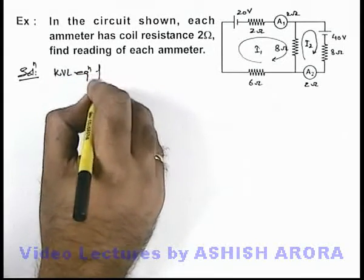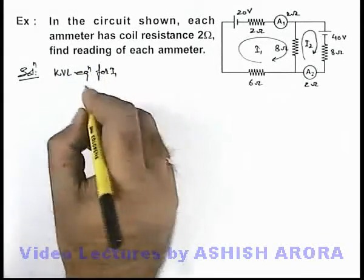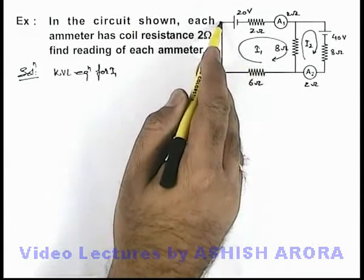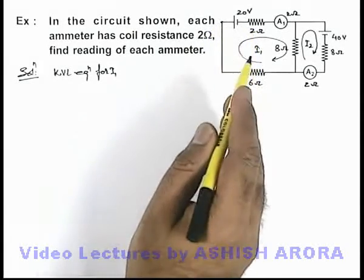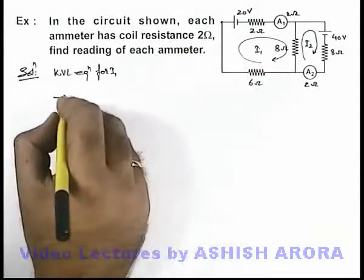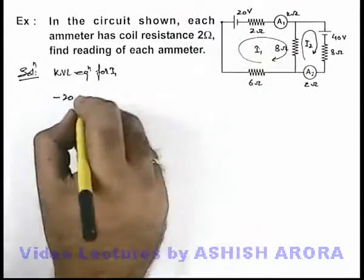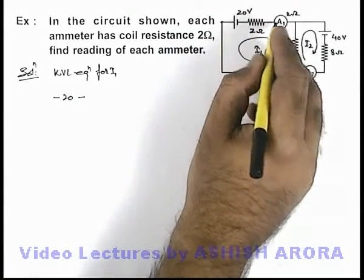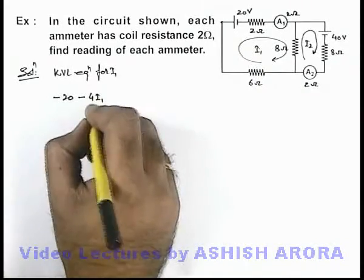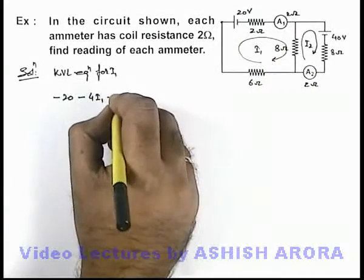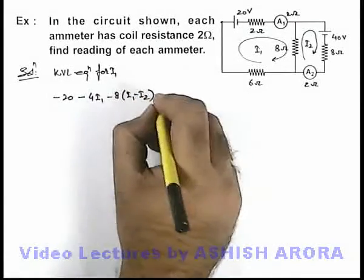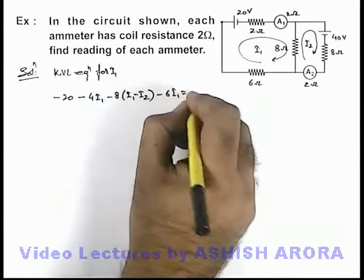If we write the KVL equation for i1, we can start from this point, and if we move along with the current, it'll be first a potential drop of 20 volts, then minus 2i1, and then again 2i1, so it can be written as minus 4i1. Then in this branch we can write minus 8(i1 minus i2), then it is minus 6i1, equal to zero.